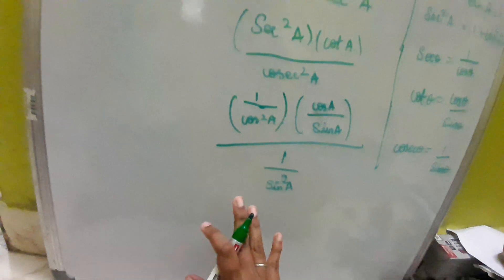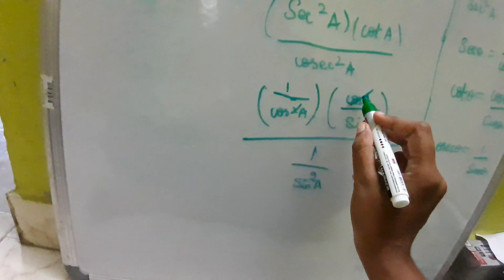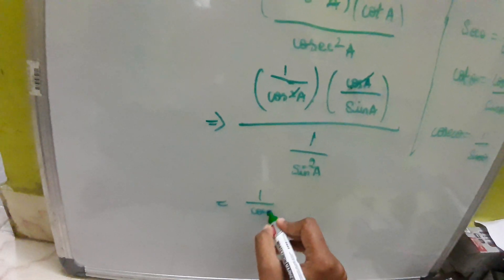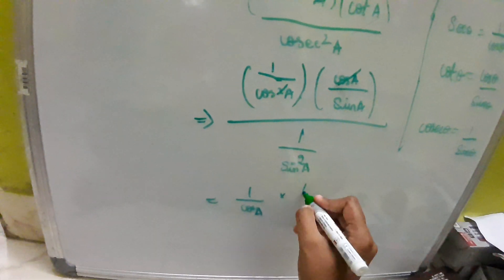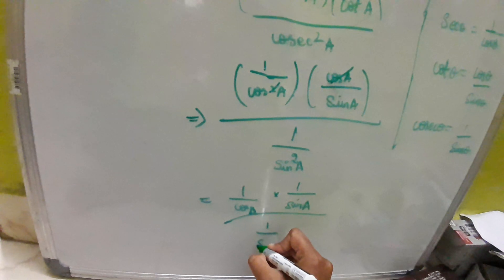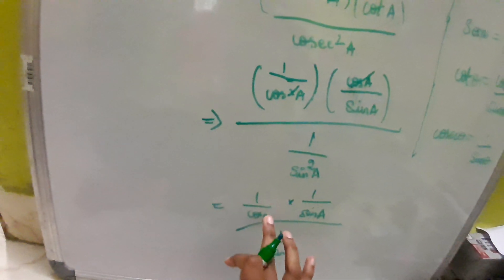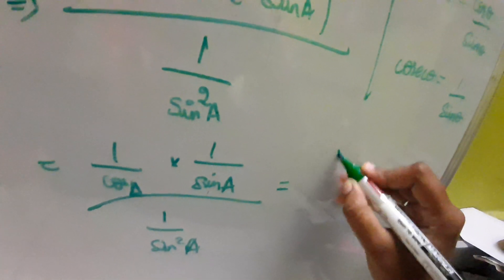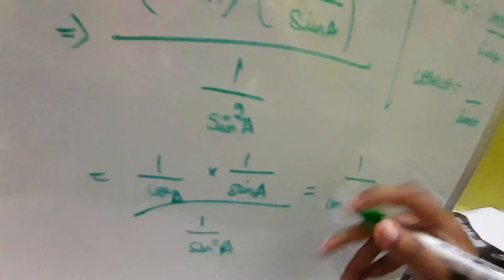Now solving this: cos a gets cancelled — here it is squared in the numerator and power 1 in cos a, so one cos a cancels. Remaining in the numerator: 1 by cos a, multiplied by 1 by sin a, giving 1 by cos a sin a.